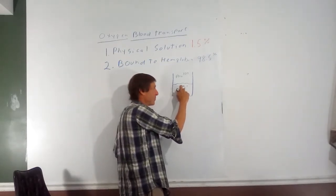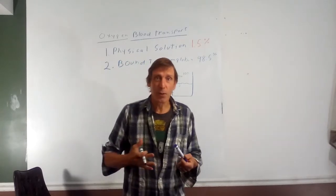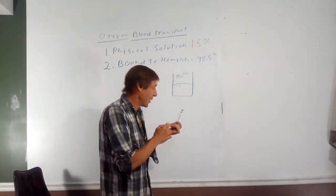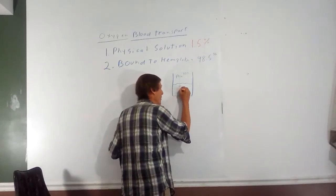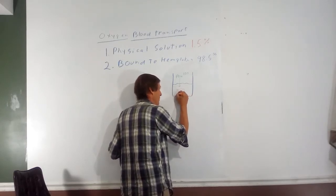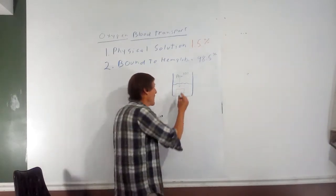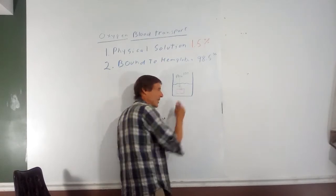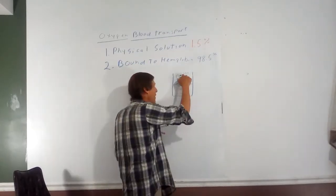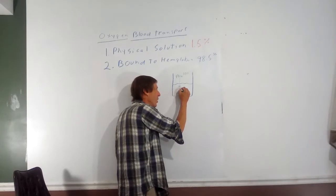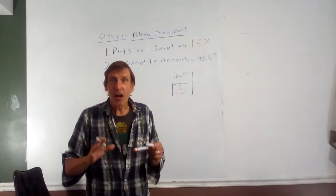If you introduce oxygen at a PO2 of 100 millimeters of mercury — about what you'd find in the lungs — and there's no hemoglobin, not much oxygen gets into that plasma component of blood because of the low solubility, and you've already reached equilibrium. What hemoglobin does — think of hemoglobin as a chemical sponge. If an oxygen molecule diffuses into the plasma and bumps into the hemoglobin, there are binding sites on hemoglobin. The iron atom is what actually bonds with the oxygen. But oxygen bound to hemoglobin does not exert a partial pressure.